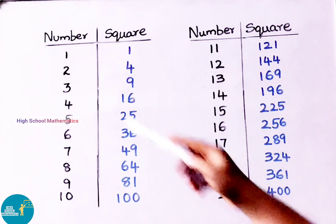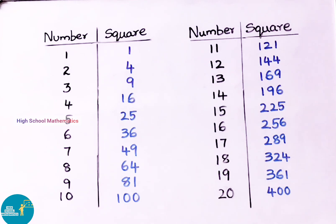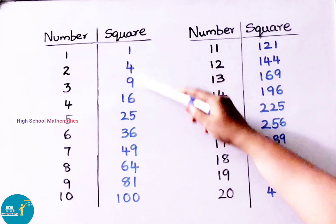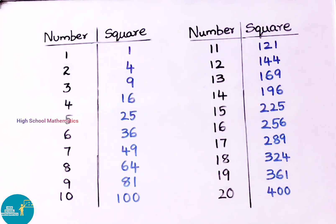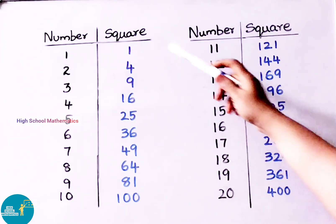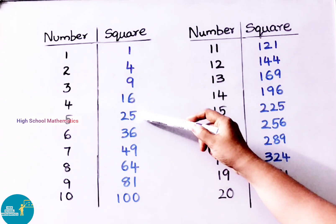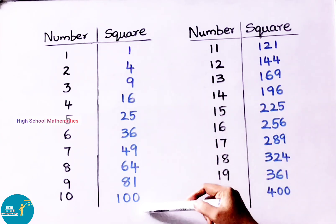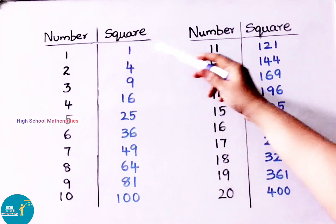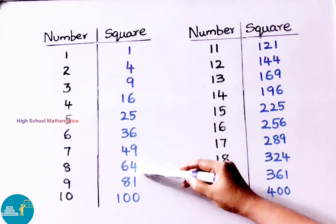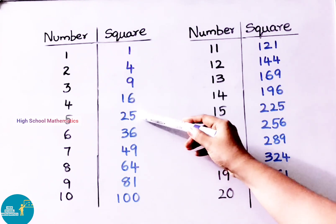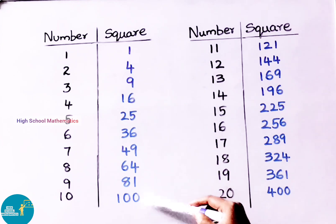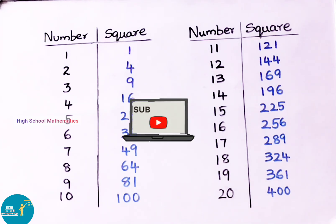Here is the list of 1 to 20 squares. If we observe these square numbers, the last digit — that is the ending digit — ends with 1, 4, 5, 6, 9 and 0. See here: 1, 4, 9, 6, 5, 1, 4, 9, 6, and 0 is also present. Let us see 11 to 20 squares also.